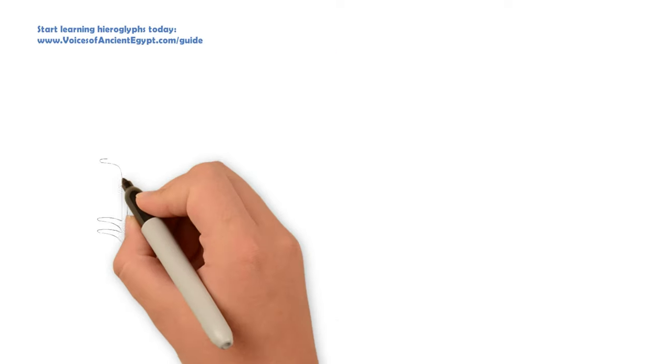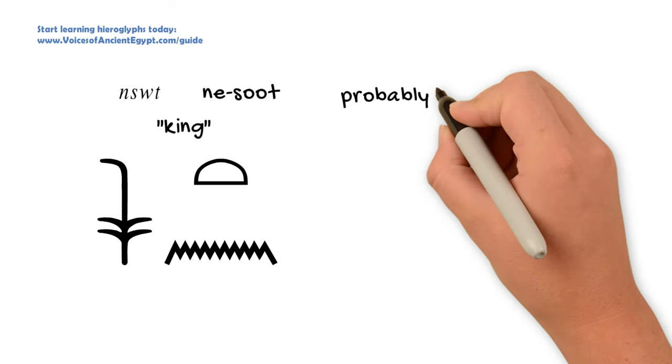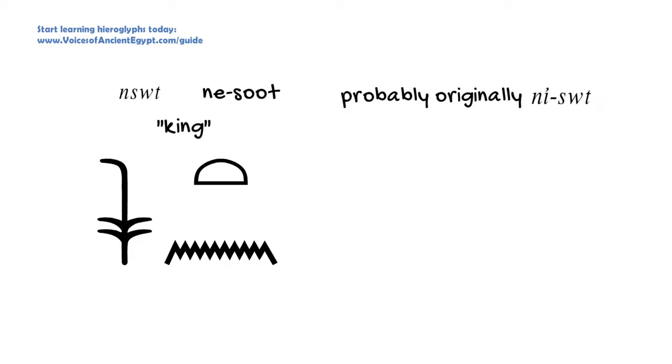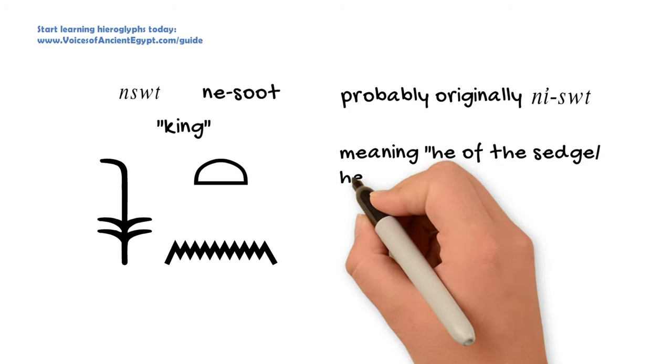But the most common place you'll probably see this is in a word for king: 'nesut.' Originally, this was probably 'nesut.' It's kind of a long story and somewhat debated, but it would literally mean, essentially, either 'he of the sedge,' 'he who owns the sedge,' or 'to whom the sedge belongs.'